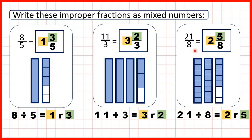We can show 21 eighths because each fraction bar has been split into 8 pieces and we have 21 pieces altogether. Dividing 21 by 8 gives 2 remainder 5 — we've made 2 whole bars but have 5 eighths of a bar remaining. So that's 2 and 5 eighths.